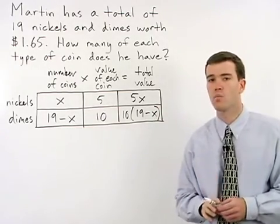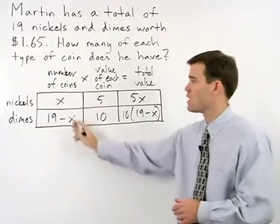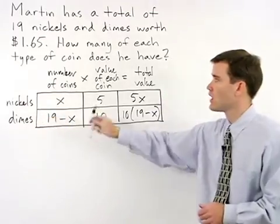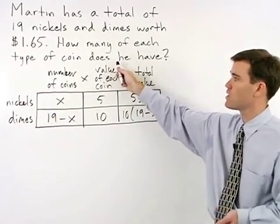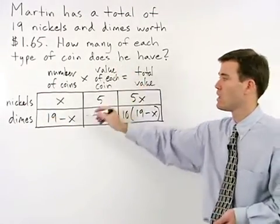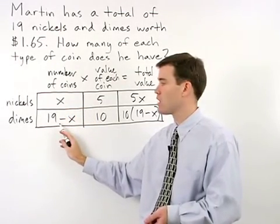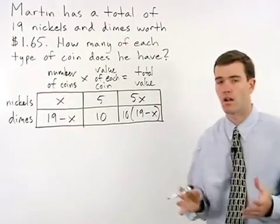Our goal in this problem will be to find x because x represents our number of nickels. And the problem asks how many of each type of coin does he have? If we know the number of nickels, we can easily find the number of dimes and we'll have our answer.